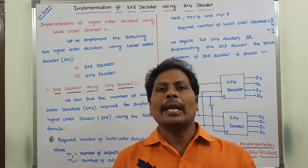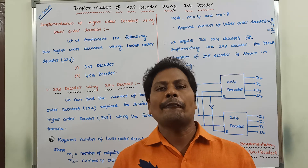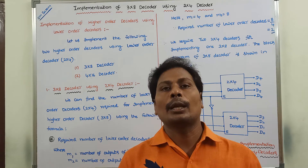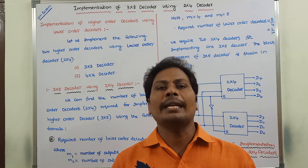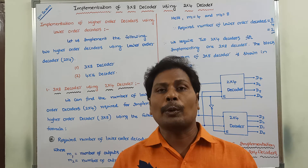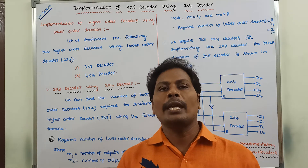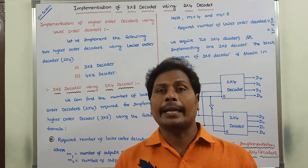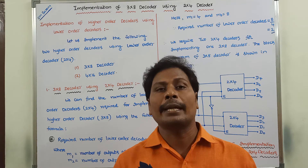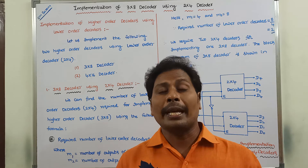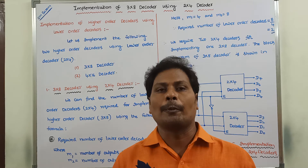Hi friends, today I am giving a lecture on implementation of higher order decoder using lower order decoder. One example for this topic is implementation of a 3 by 8 decoder using a 2 by 4 decoder. In the previous video, we discussed what is a decoder, how we implement a 2 by 4 decoder, and how we implement a 3 by 8 decoder. Please refer to those videos for a better understanding of this video.